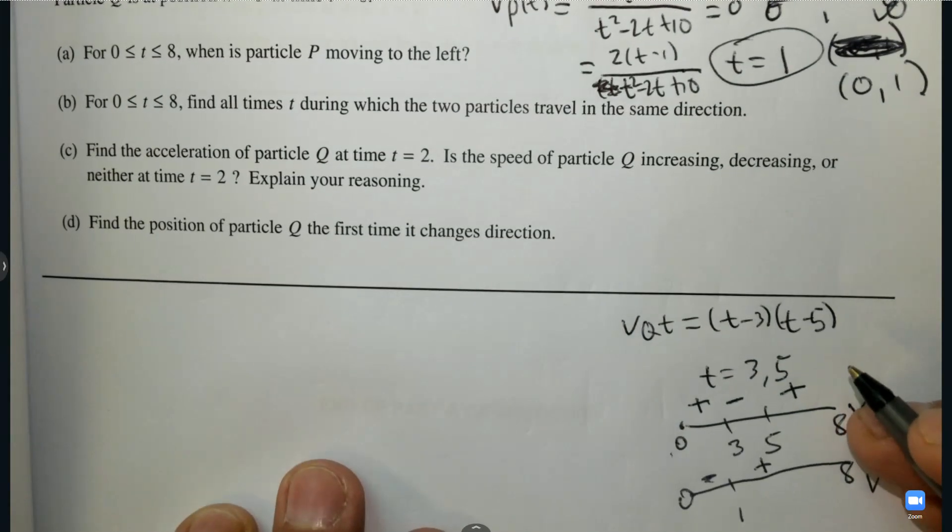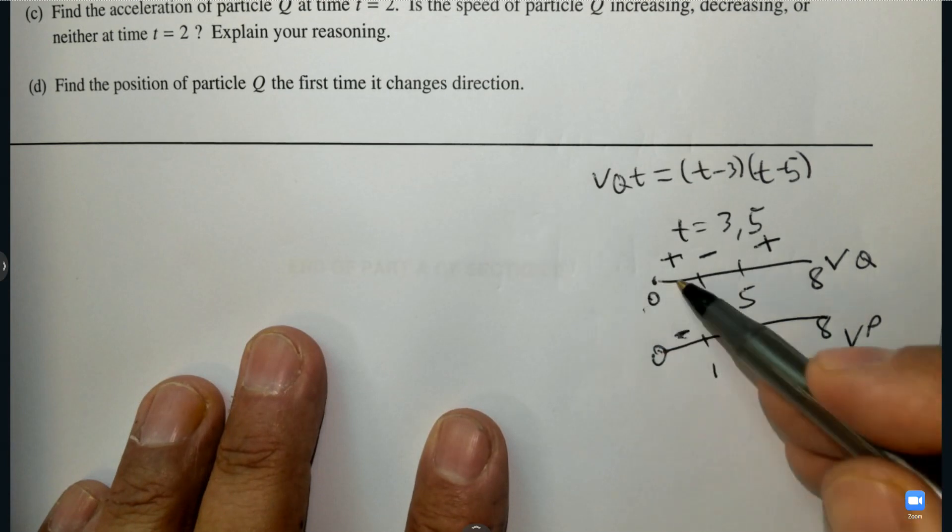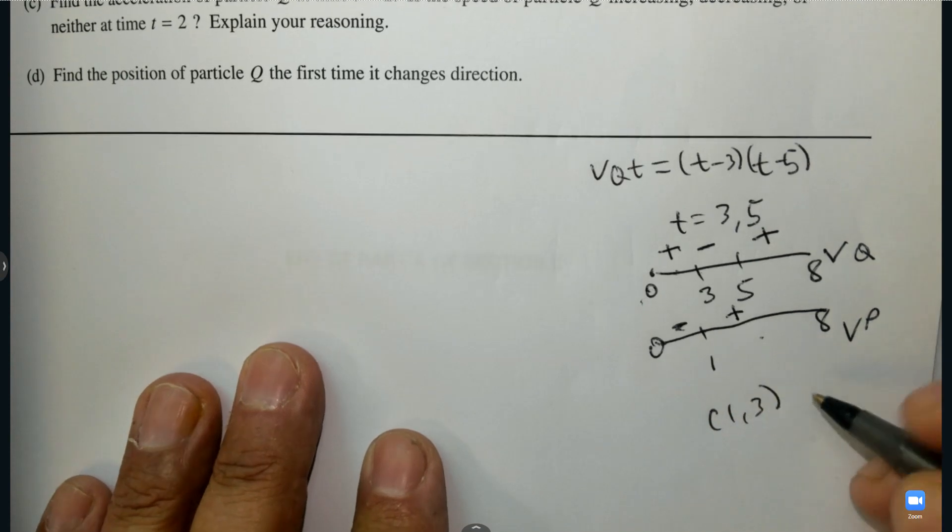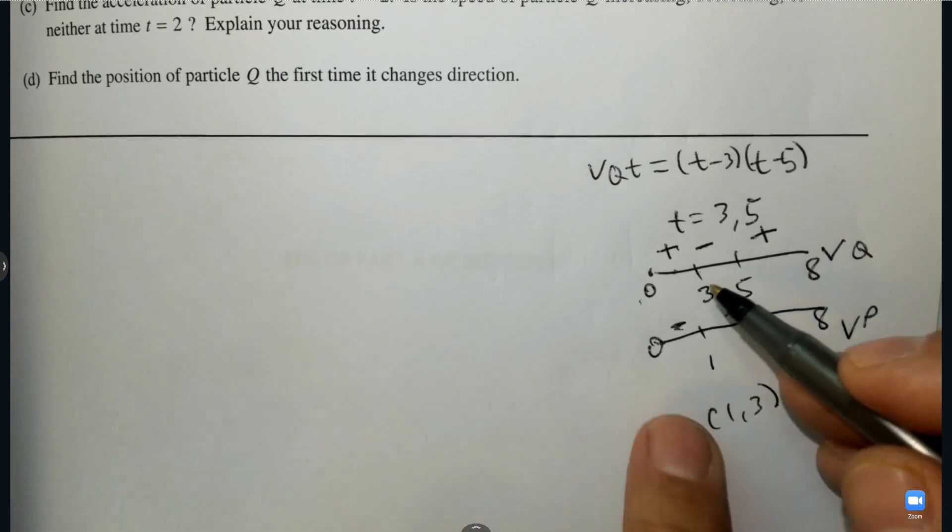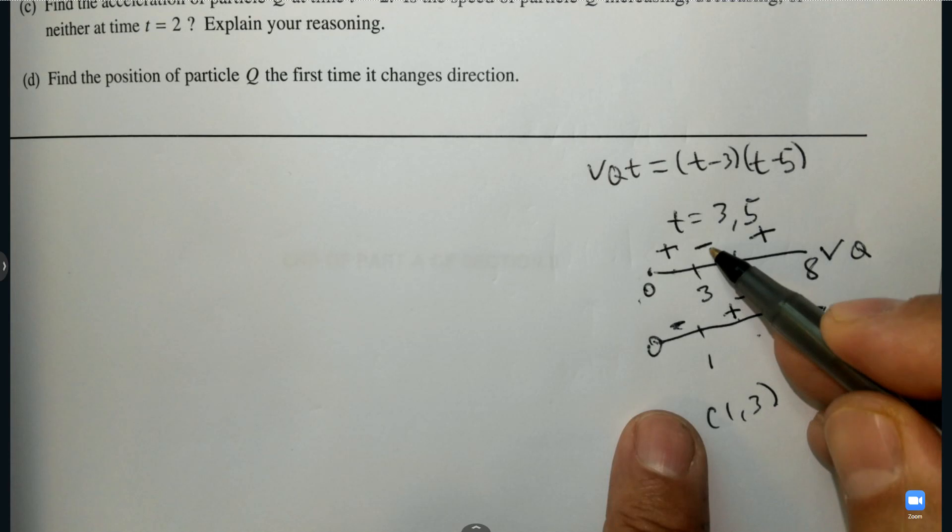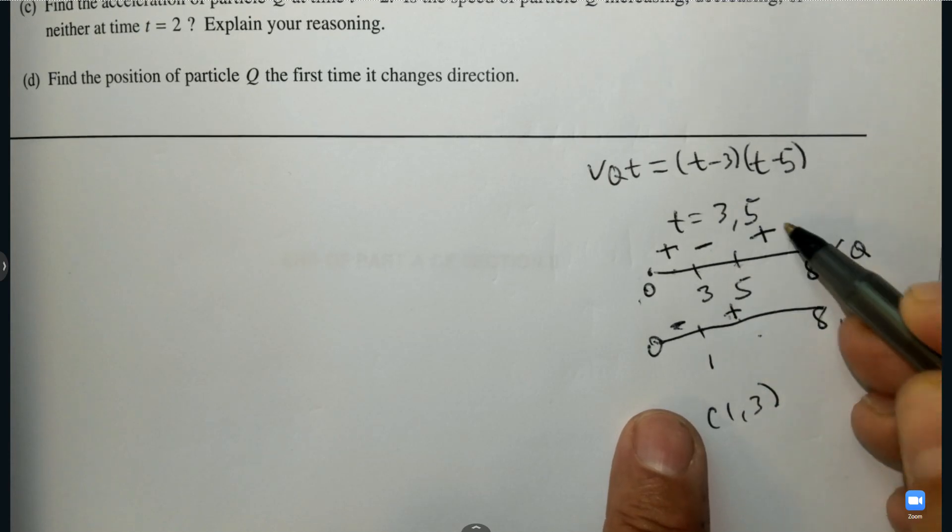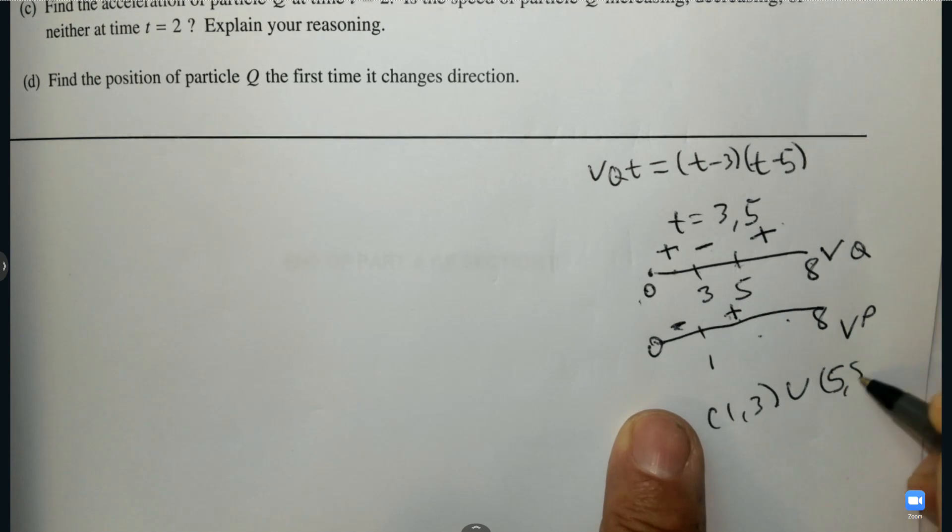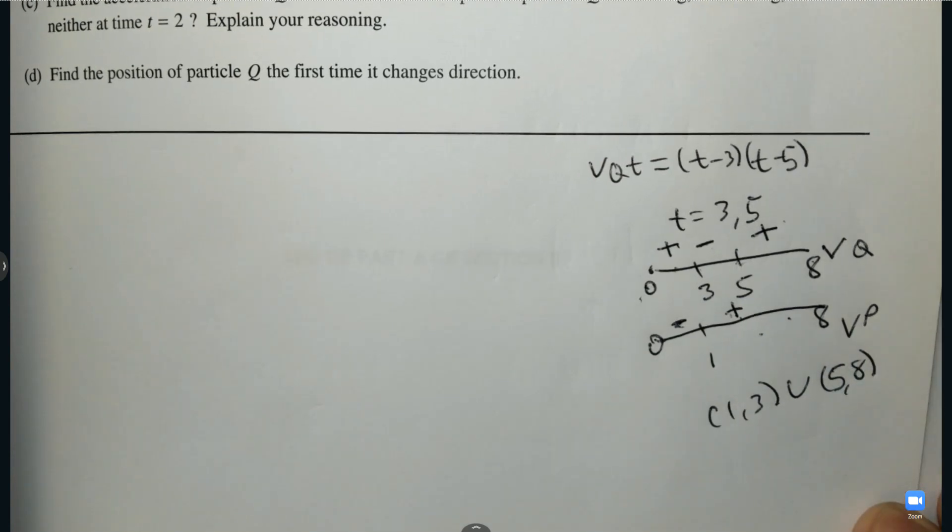So again, it goes from 0 to 8. It was 1, and it was just negative and positive. And then the question is, when are they going in the same direction? All right, let's go. From 0 to 1, not the same direction. From 1 to 3, yes. So from 1 to 3, they're going in the same direction. How about from 3 to 5? No, because it's negative. How about 5 to 8? Positive and positive. So the two times they are moving in the same direction is 1 to 3 and 5 to 8. Done.